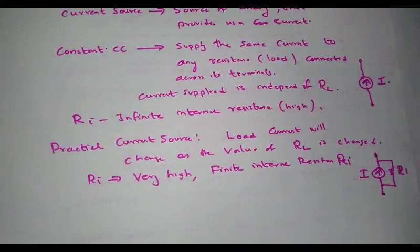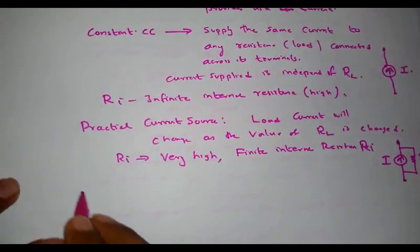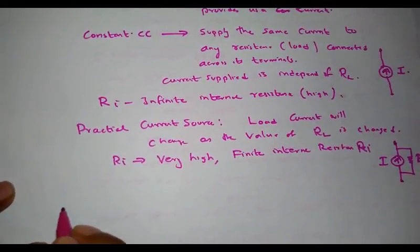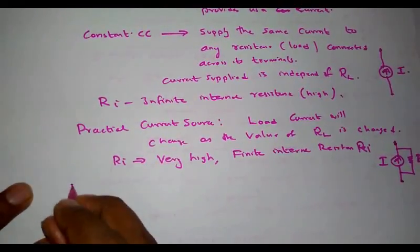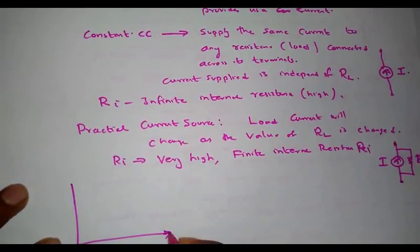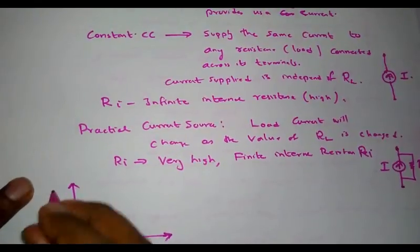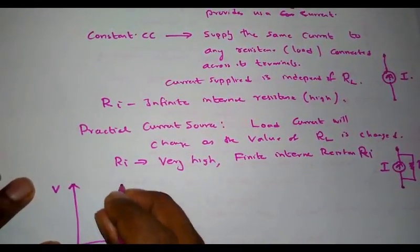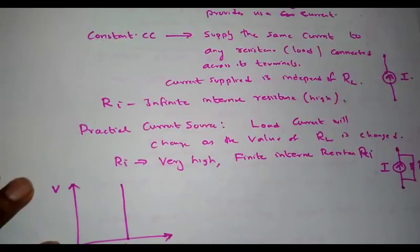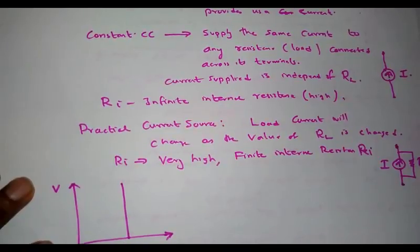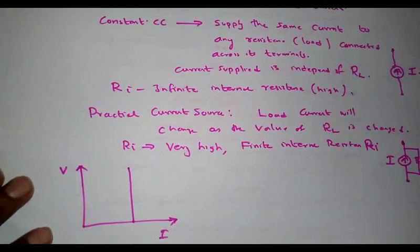Let us go through the characteristics of constant current source and practical current source. For a constant current source, the load current is independent of the value of load resistance, so the load current will always remain constant. It can be represented by a vertical straight line — current remains constant even though the voltage or load varies.